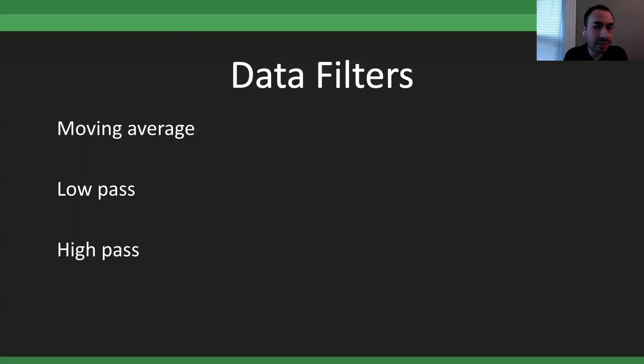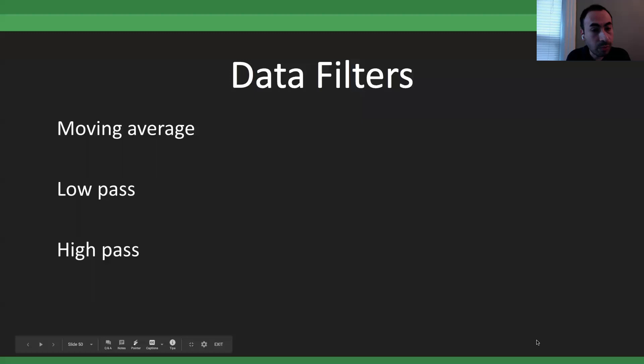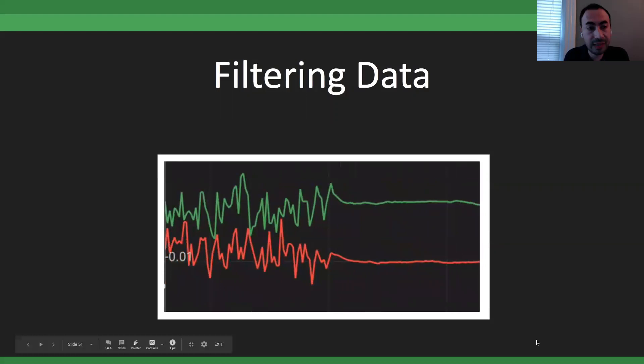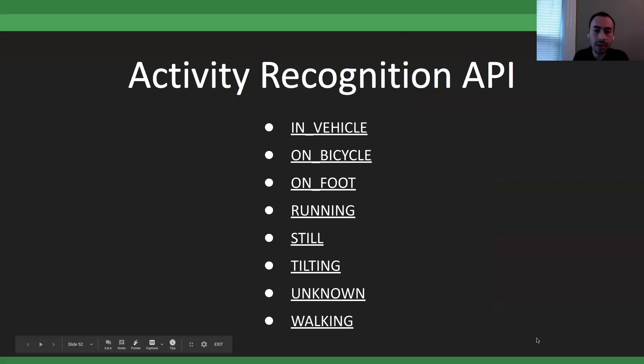To deal with noisy data, we apply filters like moving average or a low-pass filter. Moving average is the simplest: grab an array of maybe 5–10 data points, average them, and display that average instead of all individual points. You can also do low-pass or high-pass filtering to target specific frequencies — fancier with more unique use cases. With just a simple moving average filter, the data looks almost perfect.